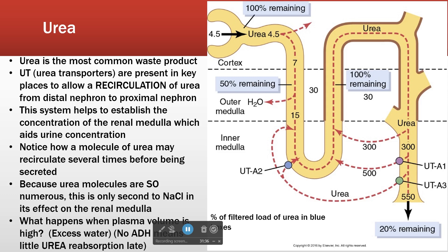From there we're in the descending limb, coming around and heading back up. The concentration of urea in this section stays relatively constant as we come around the bend and head back up.